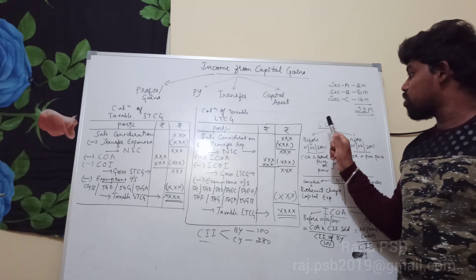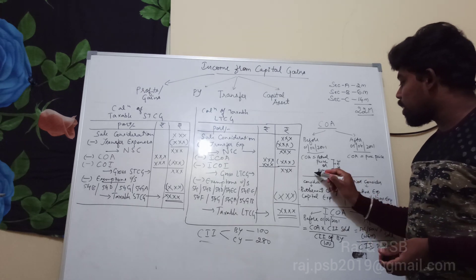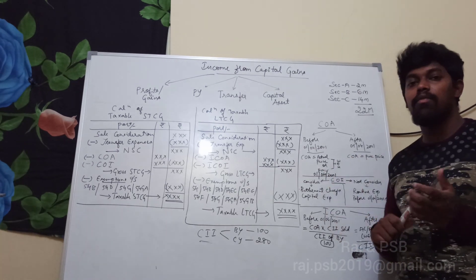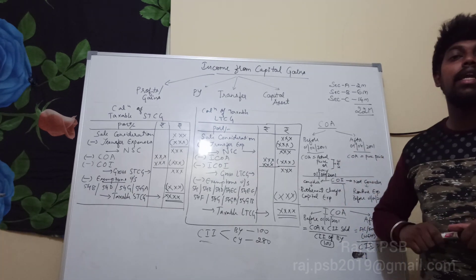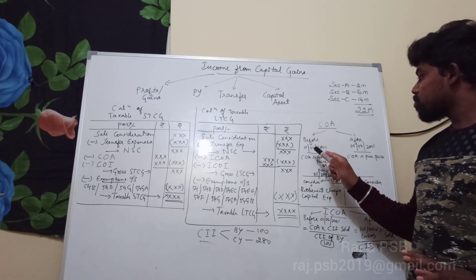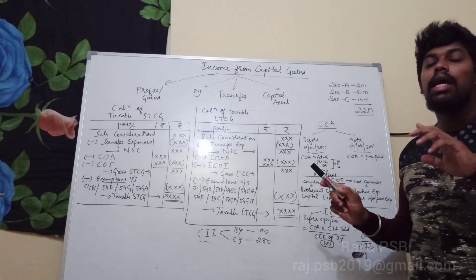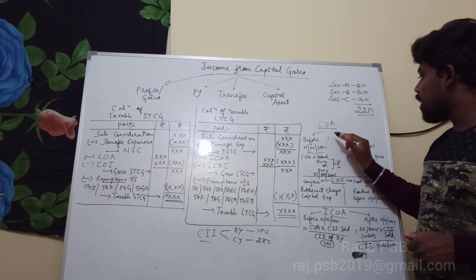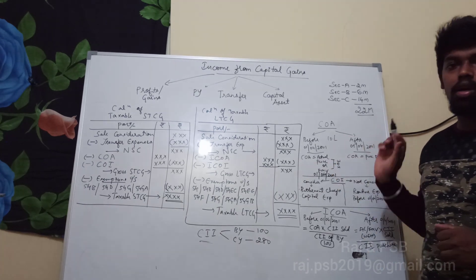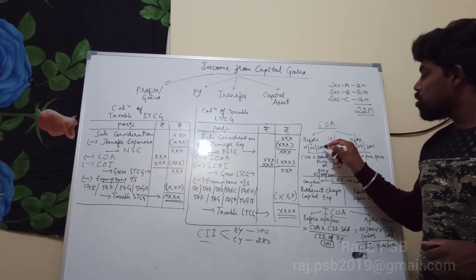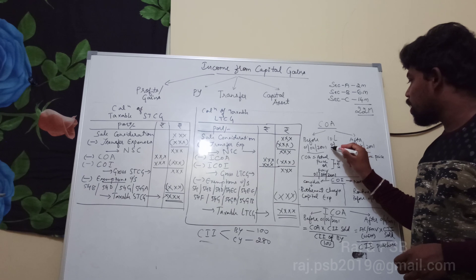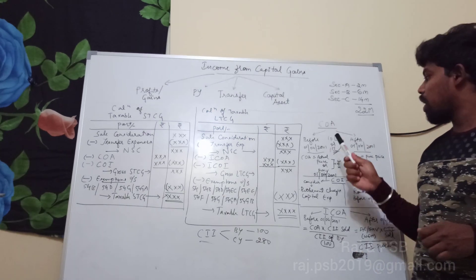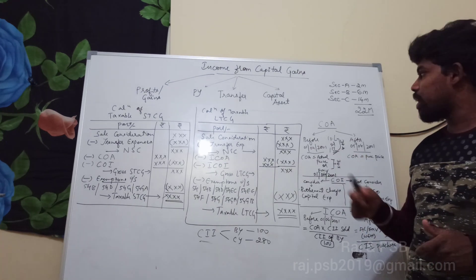For example, if an asset was purchased in 1998 for Rs. 10 lakhs, that is the actual cost. However, as of 1/4/2001 the government fixed a fair market value — say Rs. 15 lakhs. Whichever is higher — the actual cost or the fair market value as of 1/4/2001 — will be treated as the cost of acquisition. So in this case, Rs. 15 lakhs will be treated as the cost of acquisition.